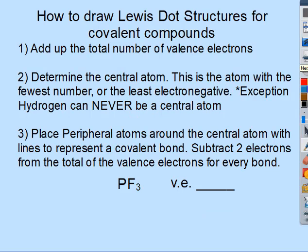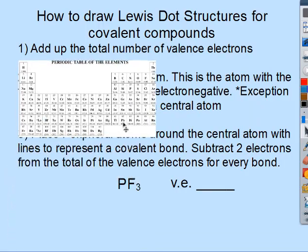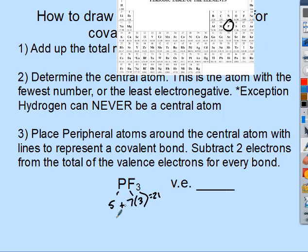The first step to drawing Lewis structures is to add up the total number of valence electrons. In this problem we have PF3. P has five valence electrons, and each fluorine has seven, but there are three fluorines, so seven times three is twenty-one. Adding five and twenty-one gives us twenty-six valence electrons to work with.